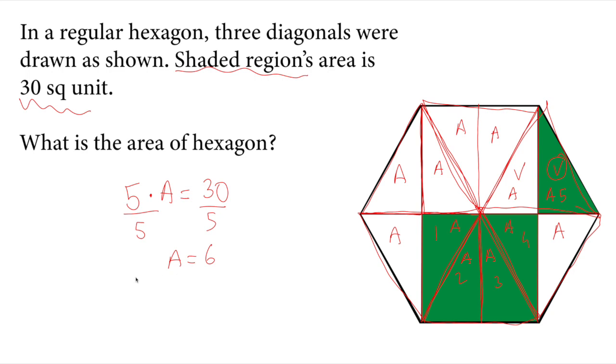So if I have 12 of them, that means 12 times A is what the question will be. So I know A is 6. 12 times 6 equals to 72 square units.